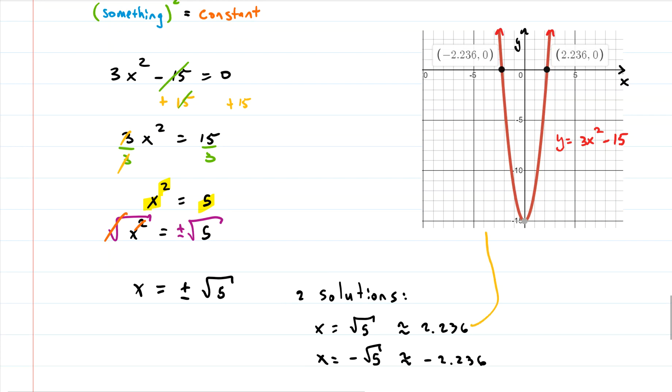So root 5 is about 2.236, and then we have a negative of that. And you can see that the positive one, we found this x-intercept, and the negative one is right here. So we found both of them.